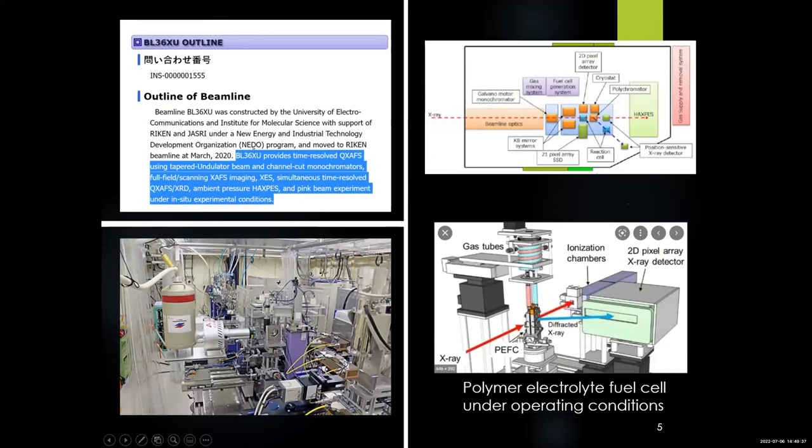And this example is Beamline BL-36XU in Spring-8. So it says it can provide time-resolved QXAFS using this undulated beam, and also can do XAS imaging, and XES, and also time-resolved QXAFS, XRD, and ambient pressure XPS, and pink beam experiment, and in-situ experimental conditions. And on the right-hand side, we can see how complicated it is, and how difficult it is to design the operando or in-situ environment. And on the bottom, you can see how packed it is. So on the bottom right, it is a little illustration of the type of experiments that can be done.